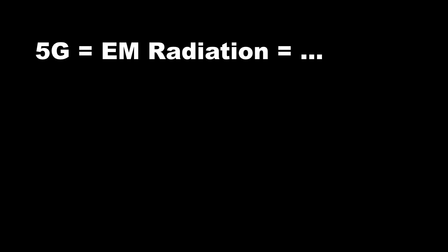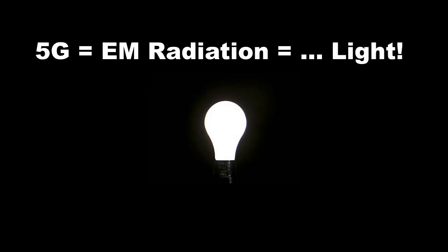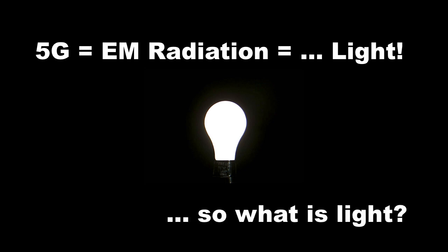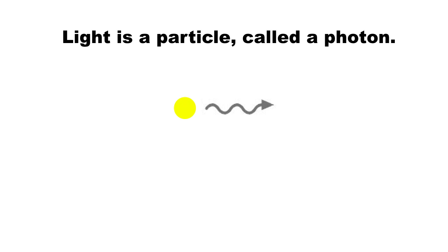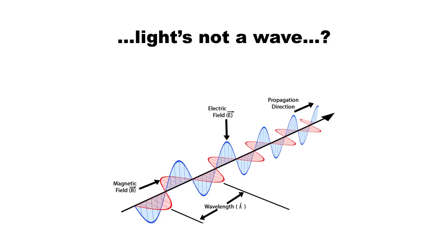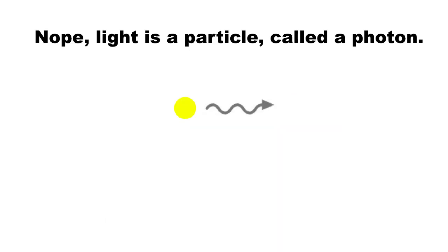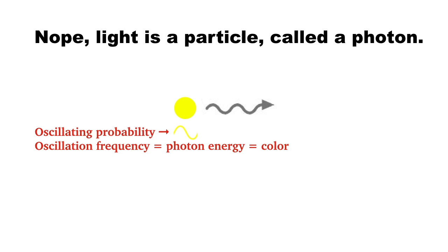Electromagnetic radiation, even though it sounds scary, is just a technical word for what is more commonly referred to as light. So what we're really asking here is what is light? Well, light is a particle called a photon. Wait, I thought light was a propagating electromagnetic wave. Actually no, light is made of particles called photons. Now due to a strange quantum mechanical property, the probability of detecting a photon oscillates in a wave-like fashion, and the frequency of this oscillation is equal to the photon's energy, which is more commonly referred to as its color.